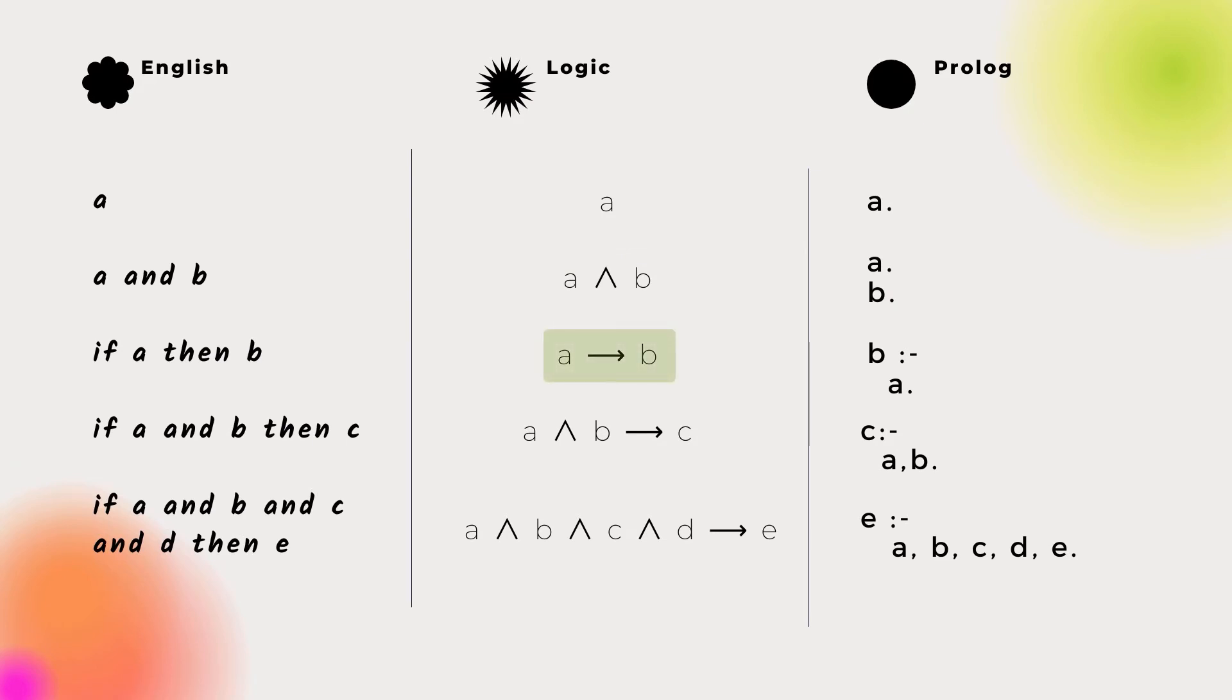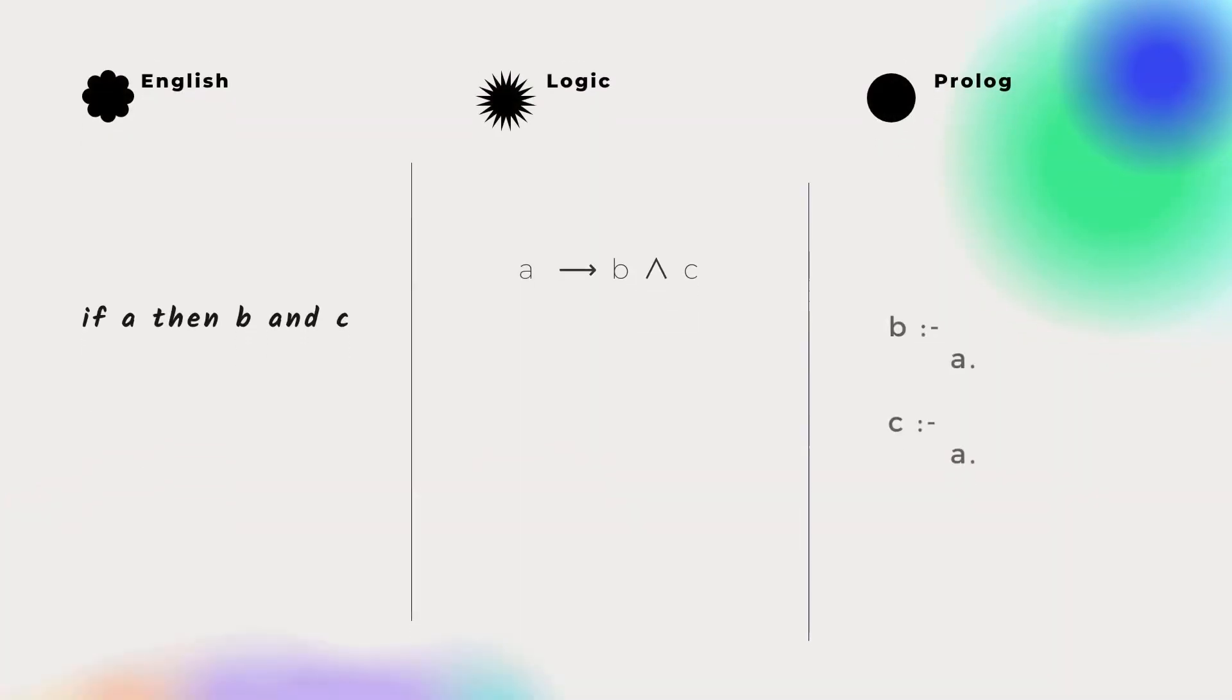Next, implication. This becomes a rule in Prolog, but take care with the direction of reasoning: B if A. Dealing with AND on the left side of an implication is also easy. But the head of a Prolog rule can only have one term, so when AND appears on the right of an implication, it's translated into two Prolog rules.